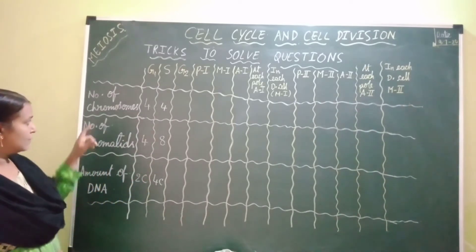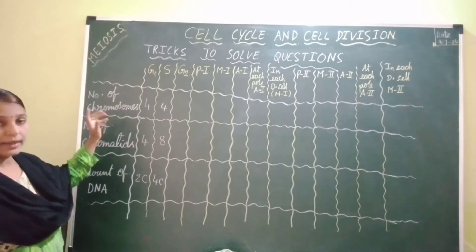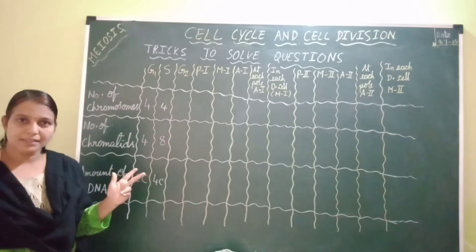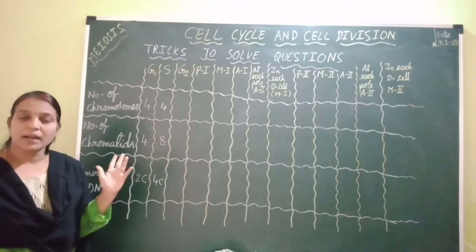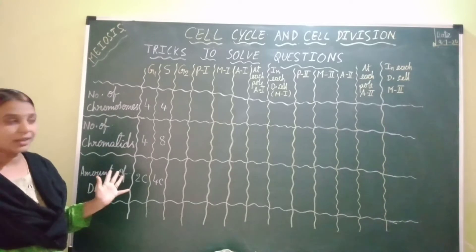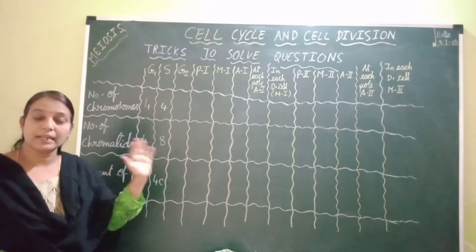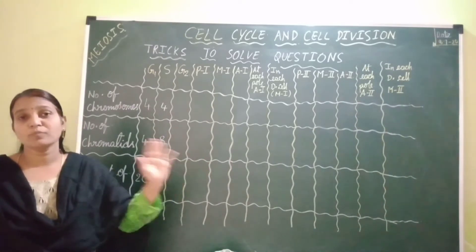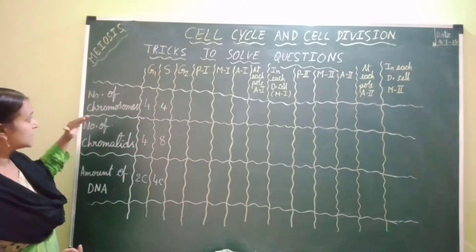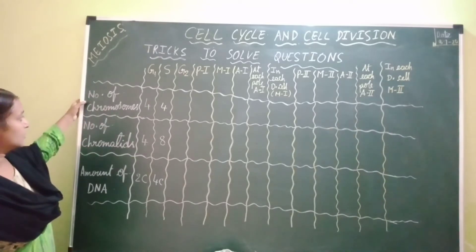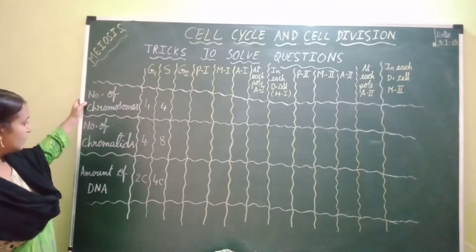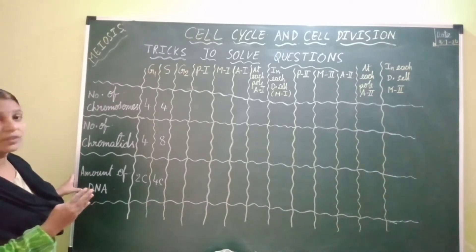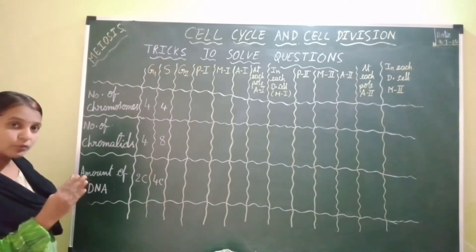In the previous video I gave tricks to solve mitotic division questions — including the number of chromosomes, number of chromatids, DNA molecules, DNA strands, number of centromeres, number of kinetochores, and amount of DNA in different phases of mitosis. Here in this video I am going to give you the number of chromosomes, number of chromatids, and amount of DNA only.